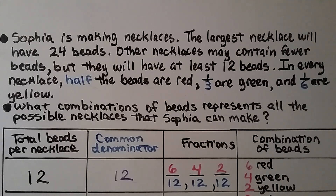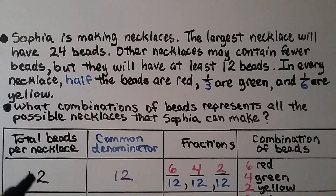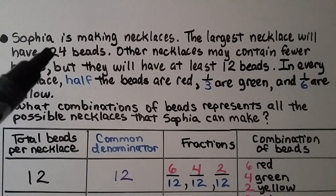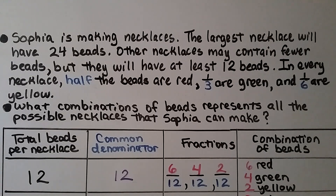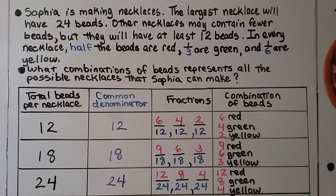Now Sophia is making necklaces. The largest necklace will have twenty-four beads. Other necklaces may contain fewer beads, but they will have at least twelve beads. In every necklace, half the beads are red, one-third are green, and one-sixth are yellow. What combinations of beads represent all the possible necklaces Sophia can make? We can solve this by making a table showing total beads, common denominators, equivalent fractions, and the combination of beads.